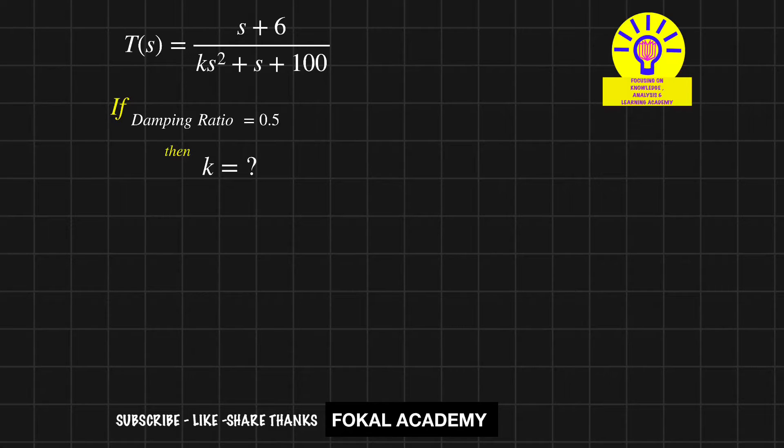In this problem, a transfer function is given as T(s) = (s+6)/(ks²+s+100). If the damping ratio is 0.5, then what is the k value? This is a second order system problem.